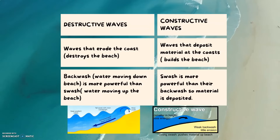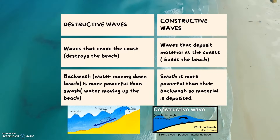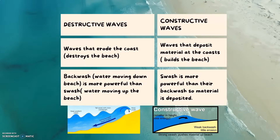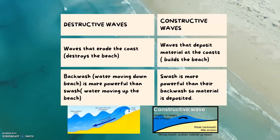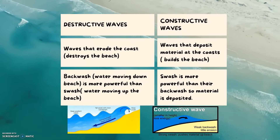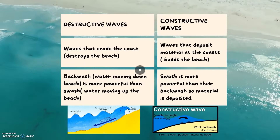Destructive waves erode the coast and destroy the beach, whereas constructive waves deposit material at the coast and build the beach. In destructive waves, the backwash — water moving down the beach — is more powerful than the swash, which is water moving up the beach. Whereas in constructive waves, the swash is more powerful than the backwash, so material is deposited.